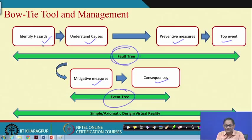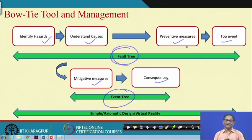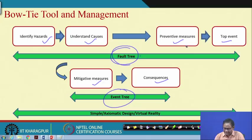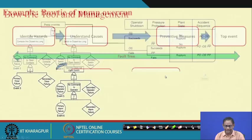Then what kind of preventive and mitigating measures will be required, and ultimately how the risk control systems will be made operational, monitored, and controlled — all those things can be put together under the bow tie tool and management. The bow tie tool and management aspect will not be discussed in this particular lecture, but later on we will try. After going through this course, you will have enough time to practice and be able to do it yourselves.